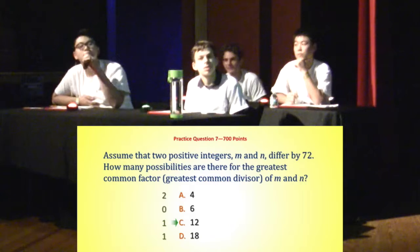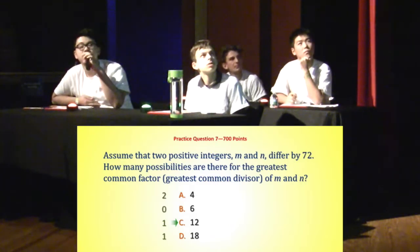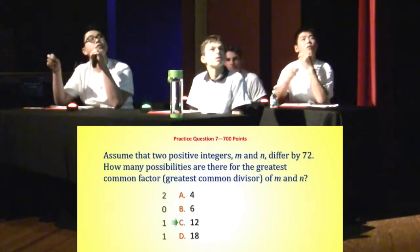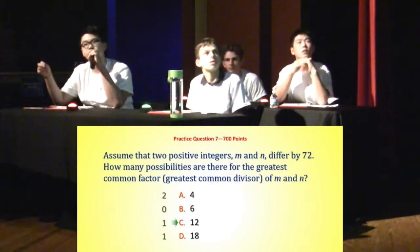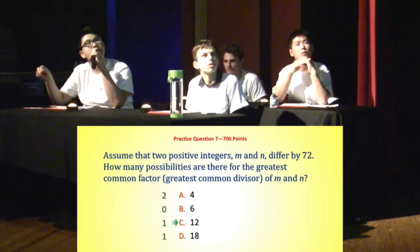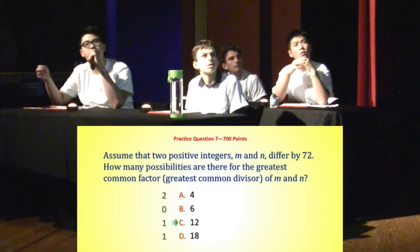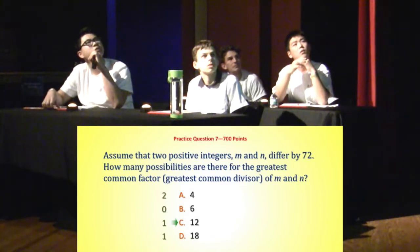How'd you get there? I figured if they differ by 72, then that means their greatest common divisor is going to be a factor of 72. You can kind of see that through experimentation. I guess it would be rigorized through mods — I'm not sure, though.